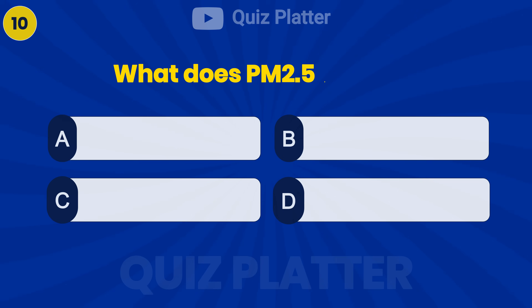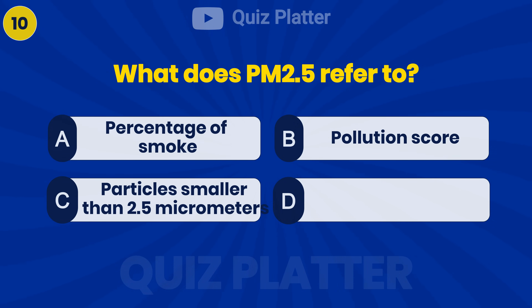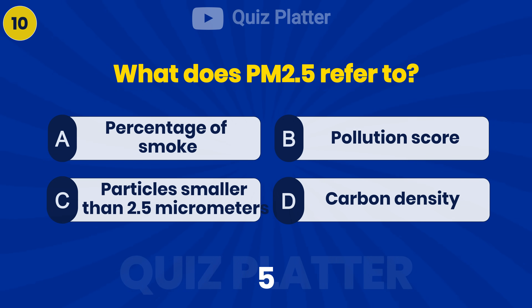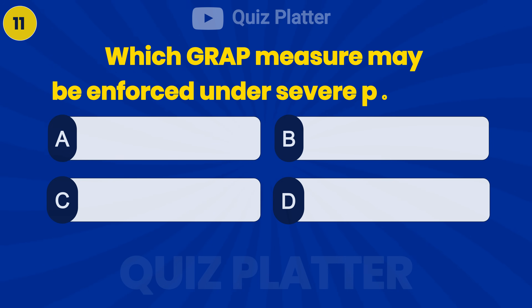What does PM 2.5 refer to? Answer: C — Particles smaller than 2.5 micrometers.